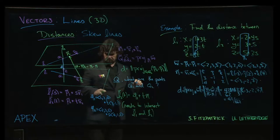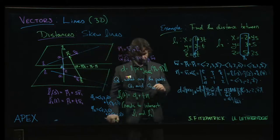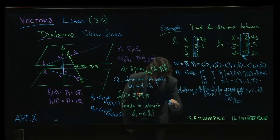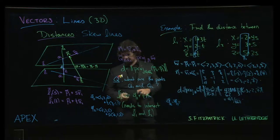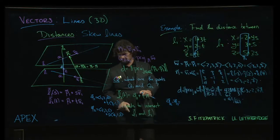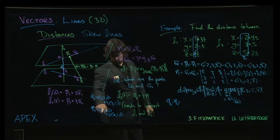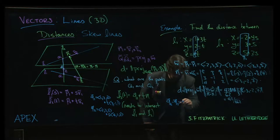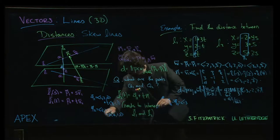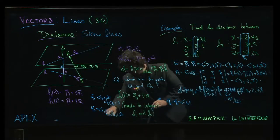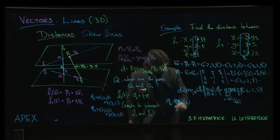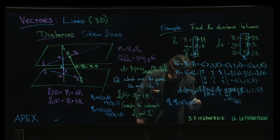So subtracting them, I'm going to get minus 2 minus 1, I get minus 3, and then I get 3 minus 2 is 1, 5 minus 0 is 5,